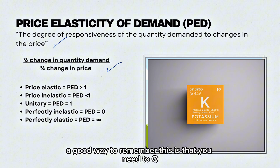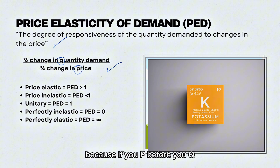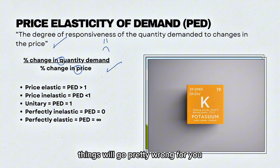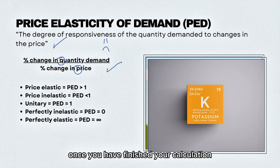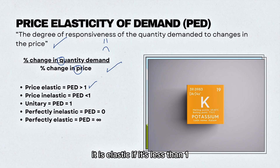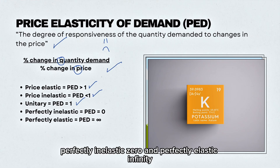A good way to remember this is that you need to Q before you P, because if you P before you Q things will go pretty wrong for you. Once you have finished your calculation: if your PED is greater than 1 it is elastic, if it's less than 1 it is inelastic, if it equals 1 it is unitary, perfectly inelastic is 0, and perfectly elastic is infinity.